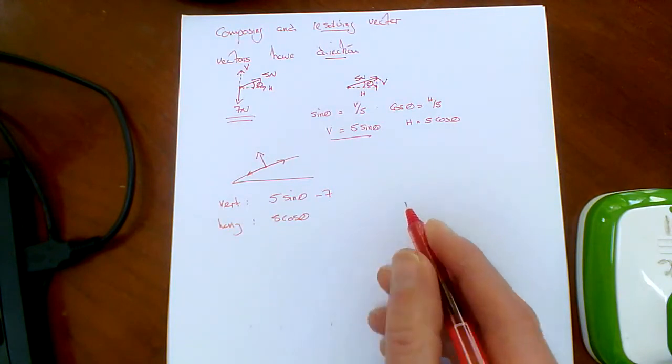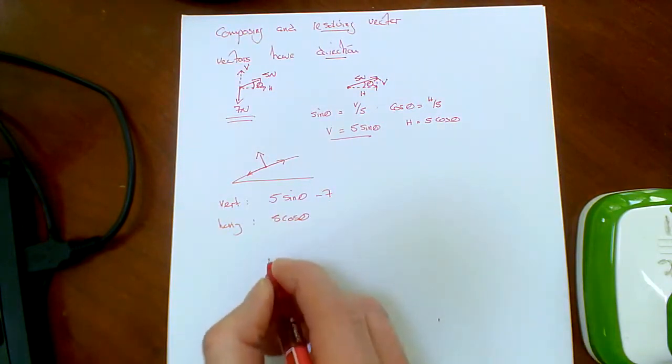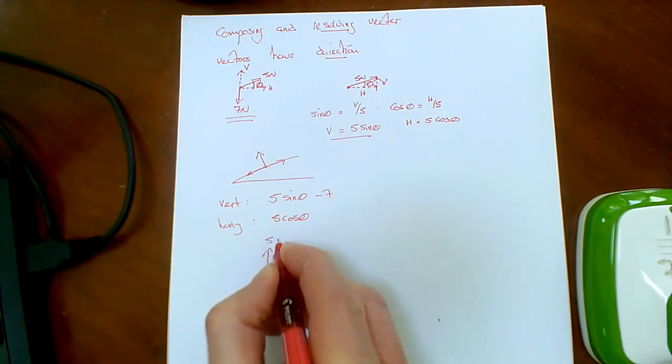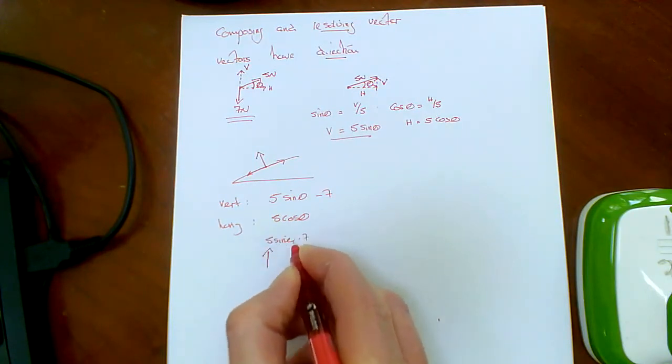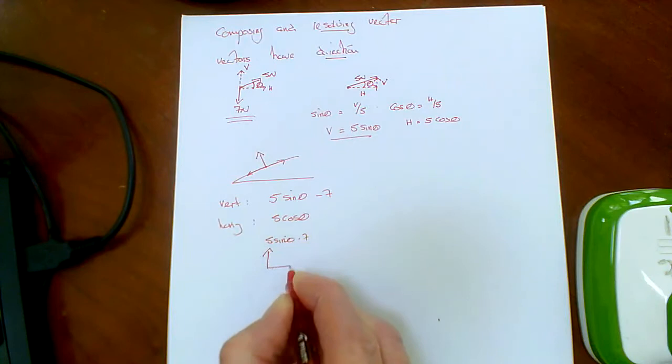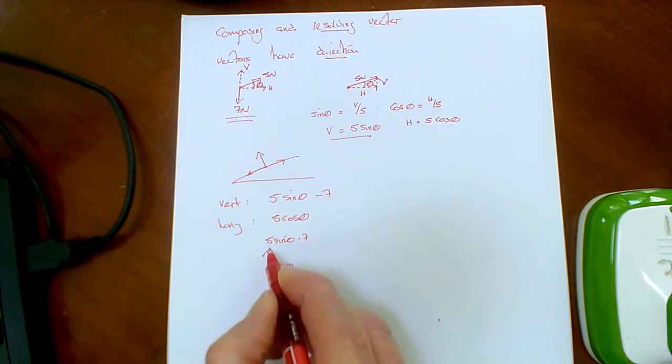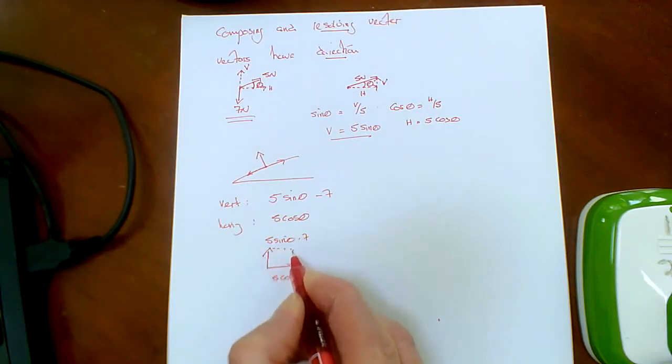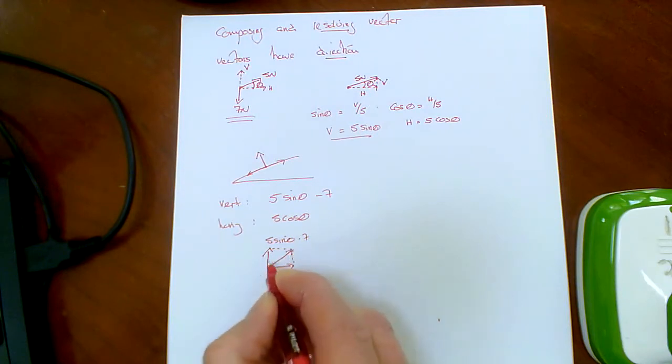So then you can say I've got 5 sine theta minus 7 that way, and I've got 5 cos theta that way. And the resultant of those two, by composing those together, is in there.